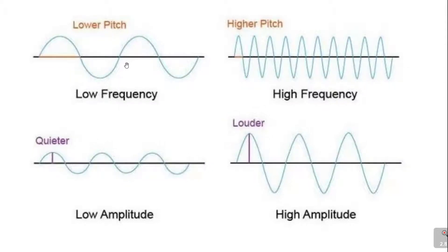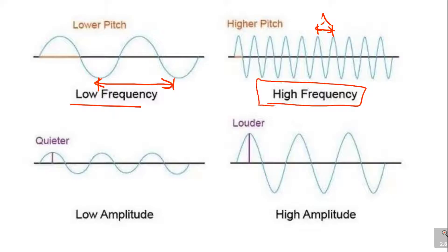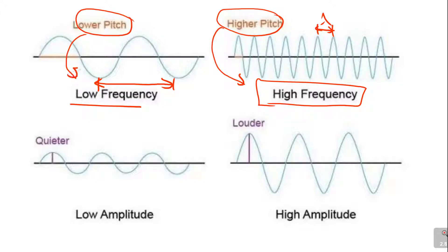This diagram brings both loudness and pitch together. For lower pitch, focus on the wavelength — a longer wavelength means low frequency, and a shorter wavelength means high frequency, which is high pitch. For quieter sound, the wavelength stays the same but the amplitude is shorter. A longer amplitude means a louder sound.